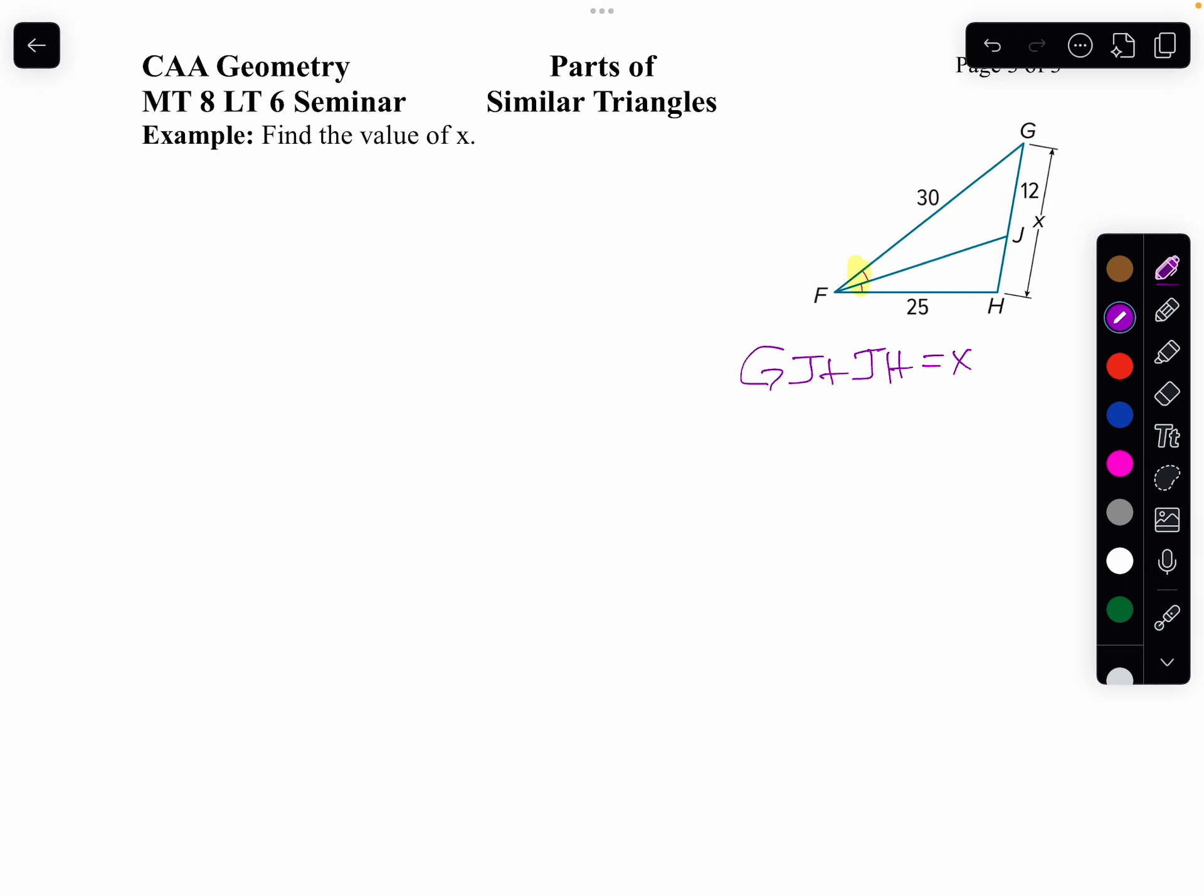Or 12 plus jh equals x. So if I subtract 12 from both sides, jh is going to be x minus 12.